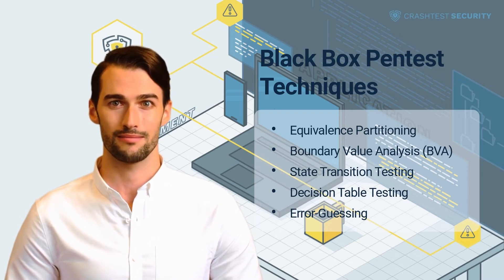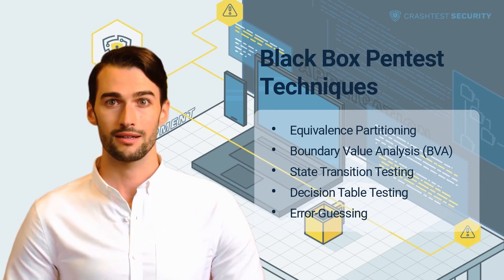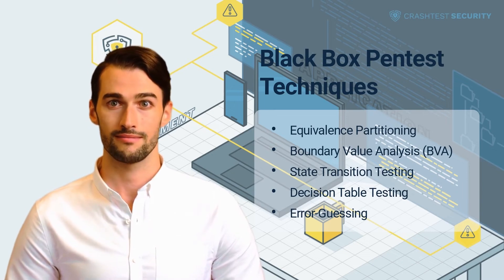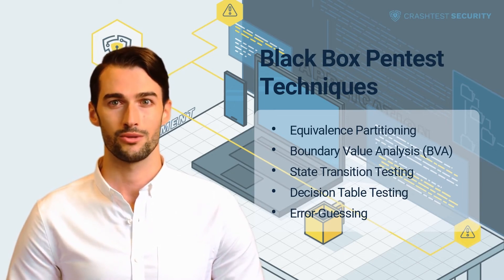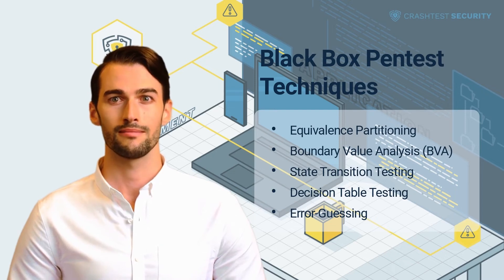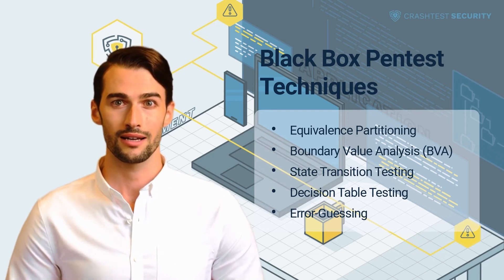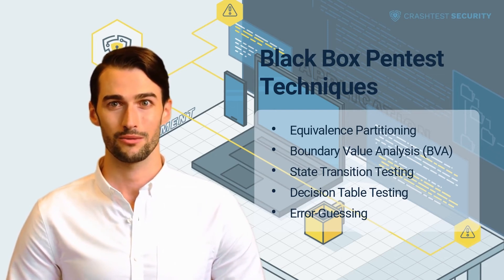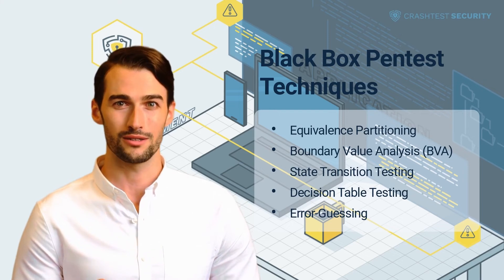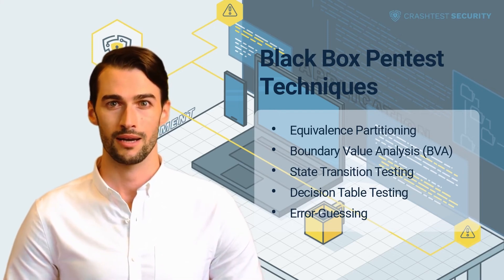Boundary Value Analysis (BVA) is a black-box testing technique that uses boundary values — values at the lower and upper limits of variables — to identify the source of input errors. Using this technique, testers design test cases to examine application functionality at the beginning and end of each partition using test data. BVA is commonly used to identify system errors at the extreme ends of the input domain.